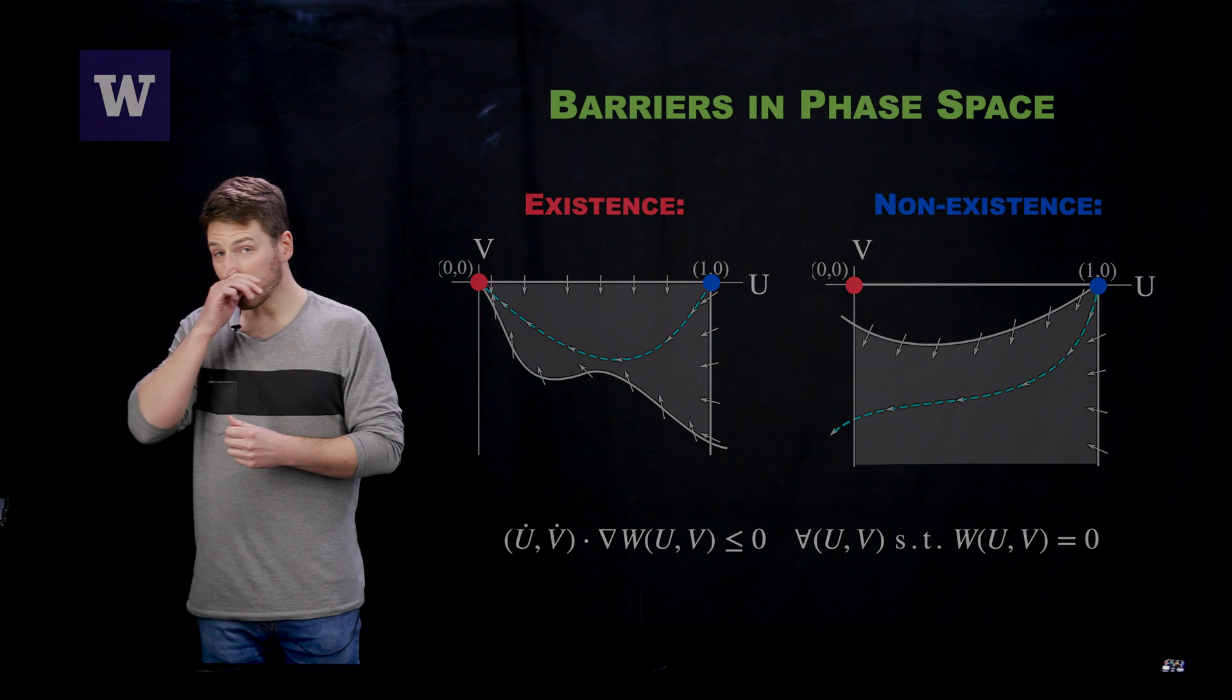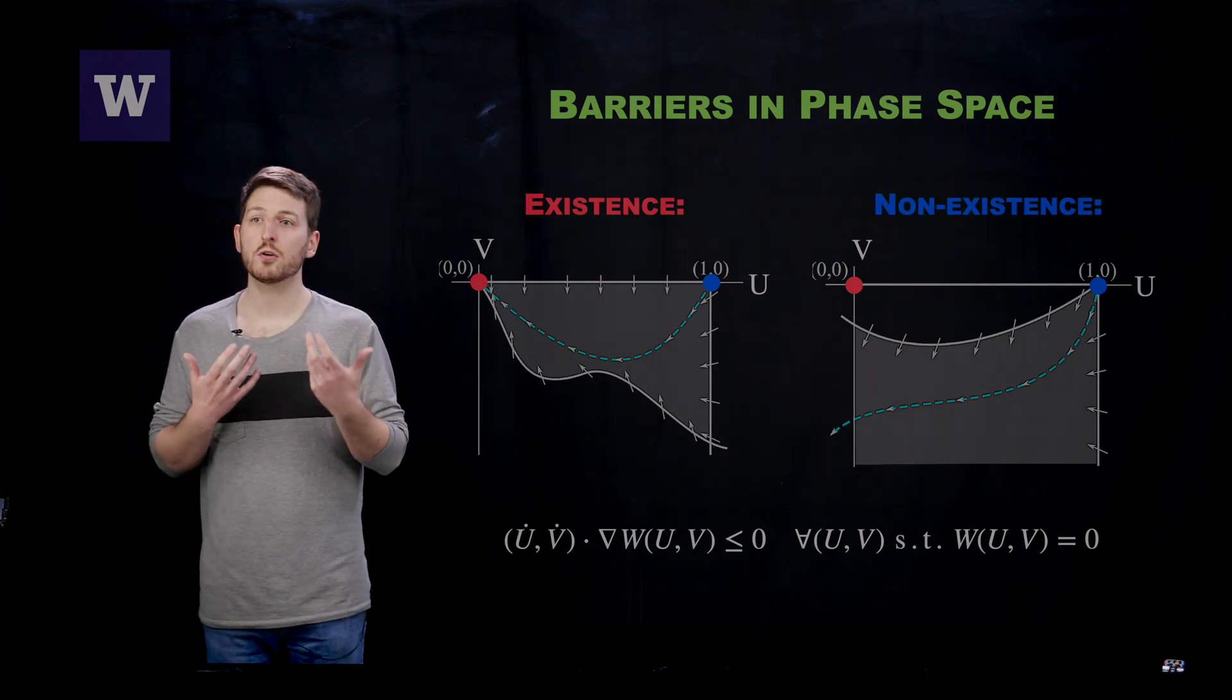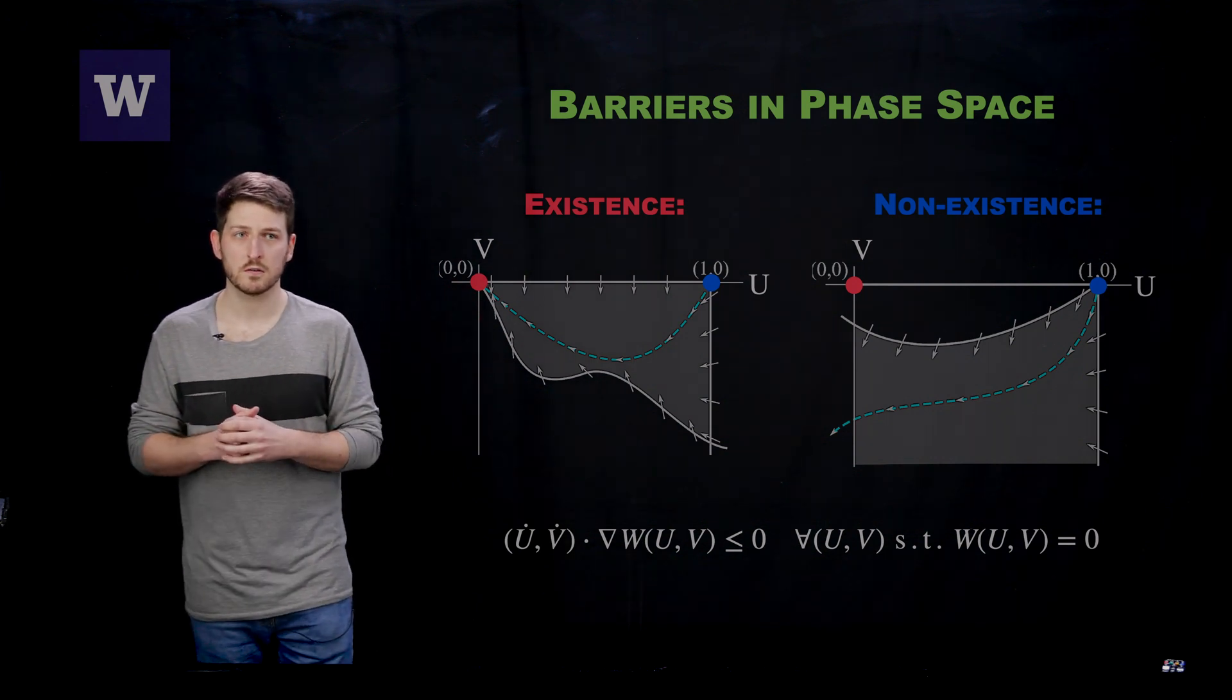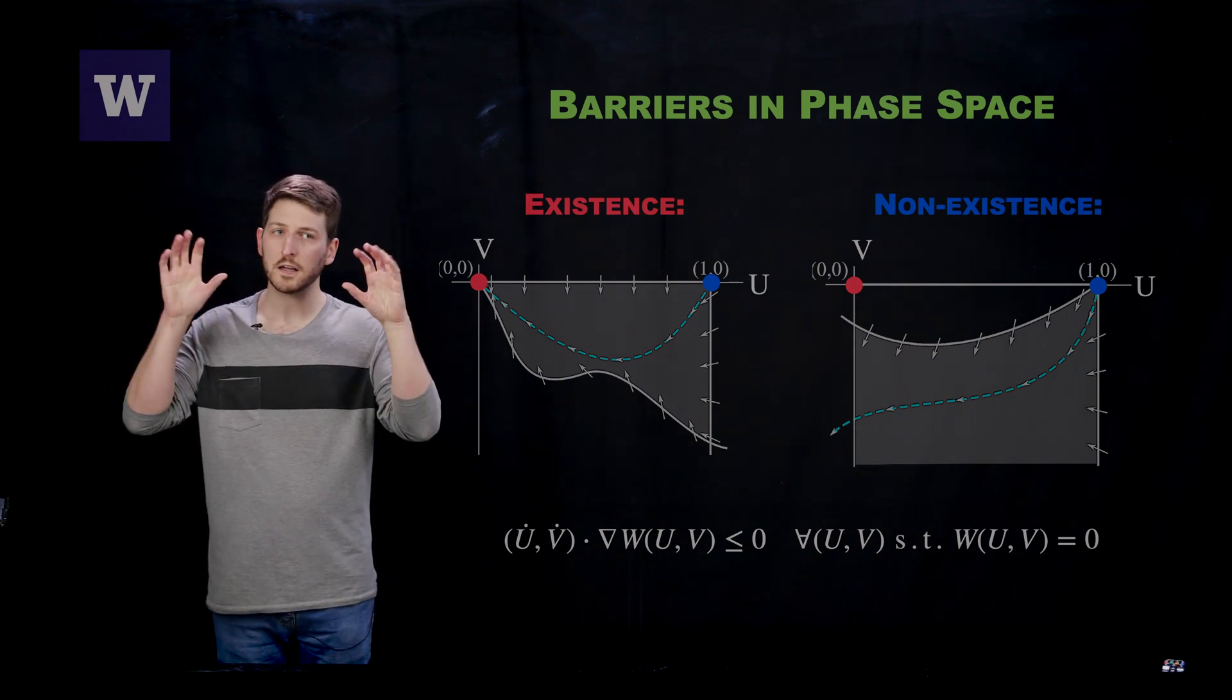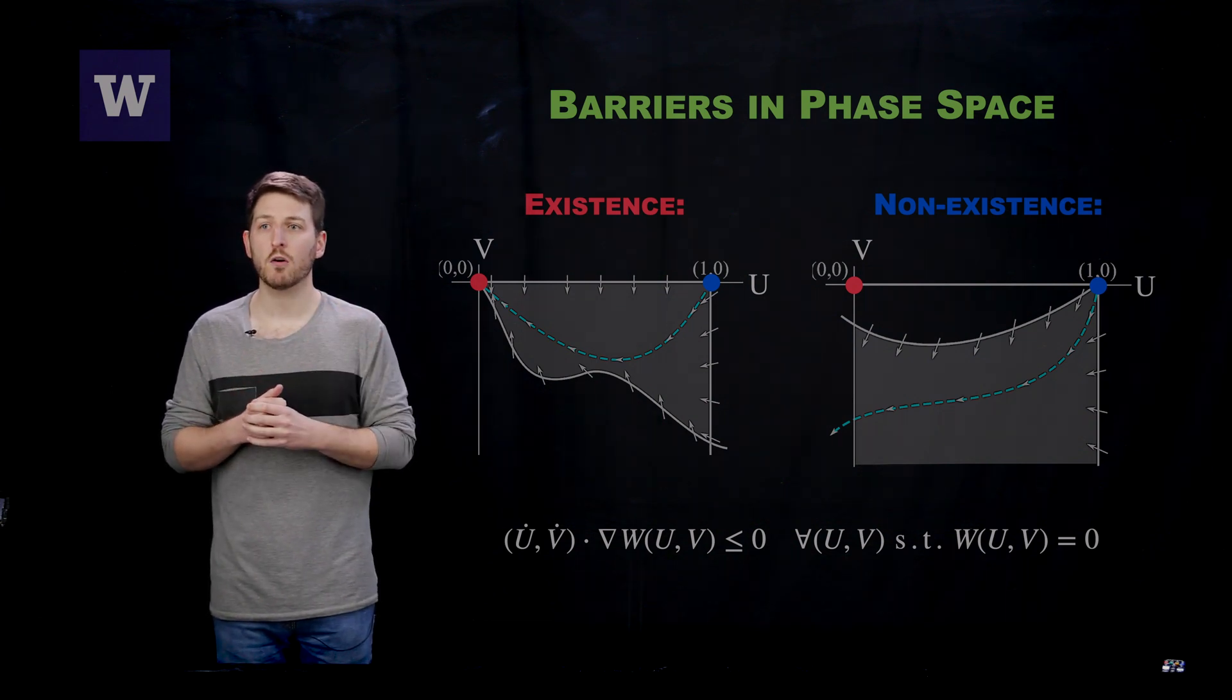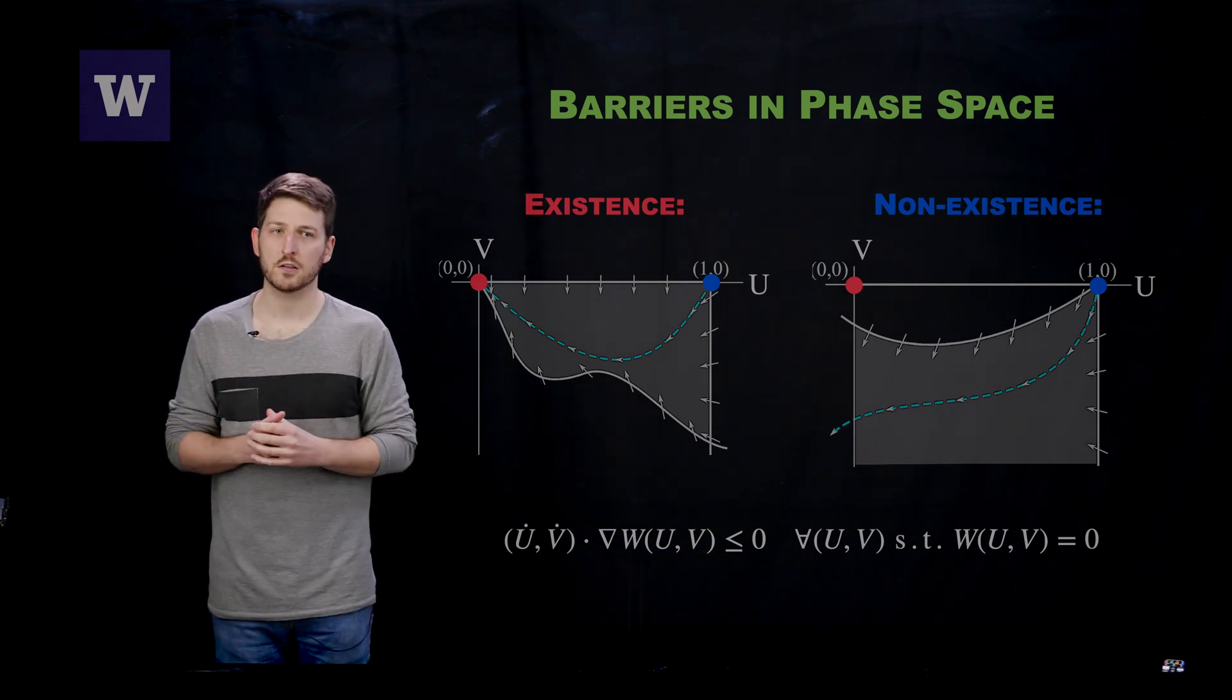In particular, we decided to turn to an old technique from dynamical systems theory in order to prove the existence of these traveling wave solutions. Remember, these traveling waves manifest themselves as heteroclinic connections between the blue and the red state. Therefore, we propose to use barriers in phase space in order to guarantee that you either have or do not have such a solution.